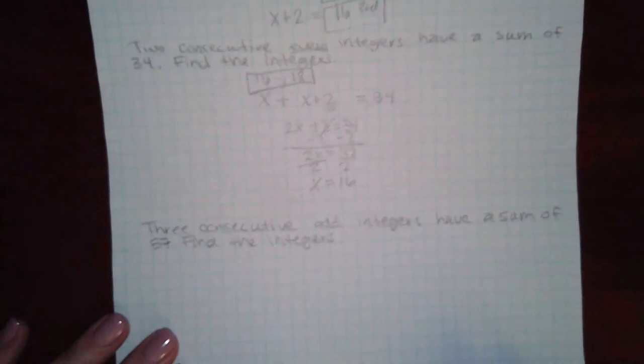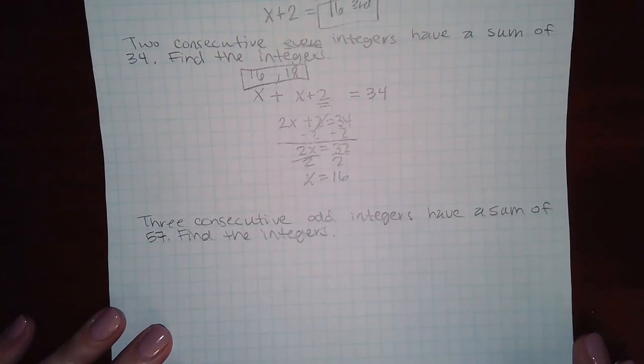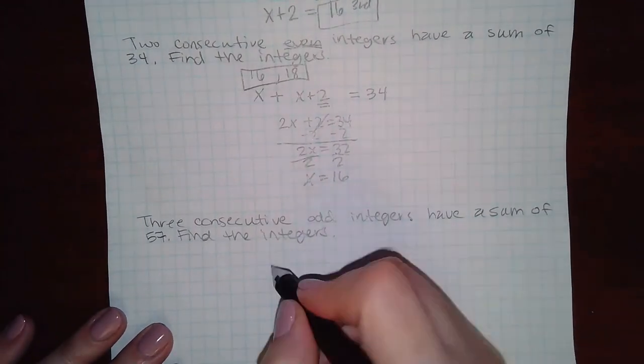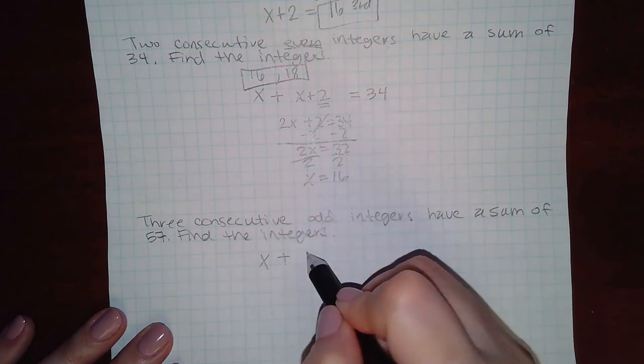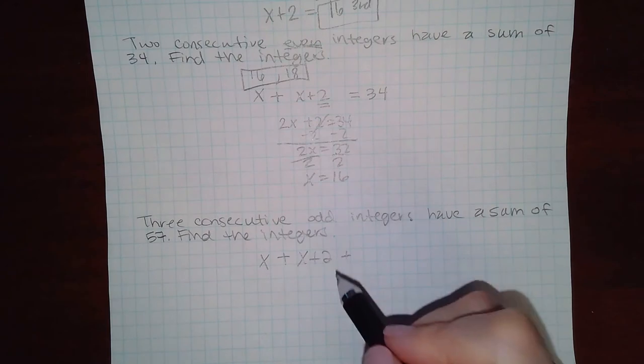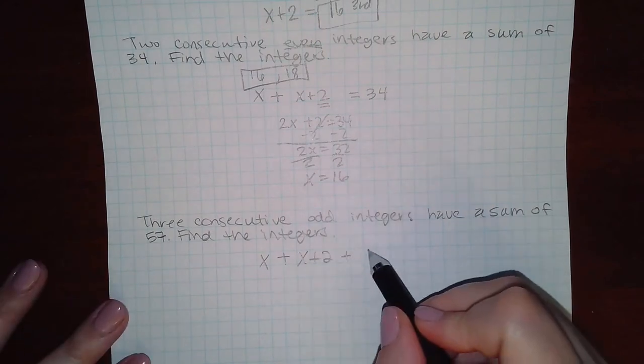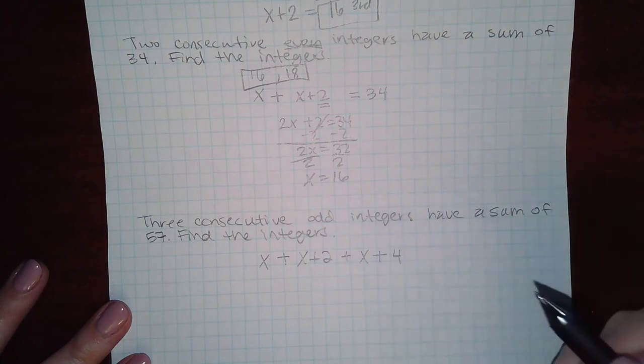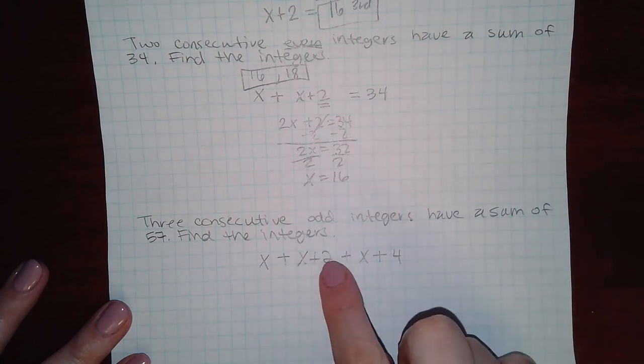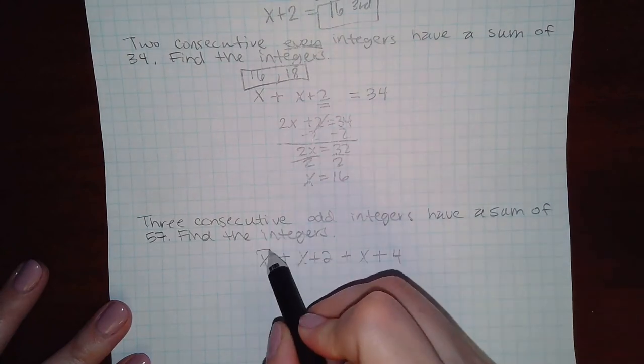Now the last problem says three consecutive odd integers so if you start off with the first integer in order to get to the next odd number you also have to add 2 and then to get to the next odd number you have to add 2 more which means x plus 4. So that's the three consecutive integers.